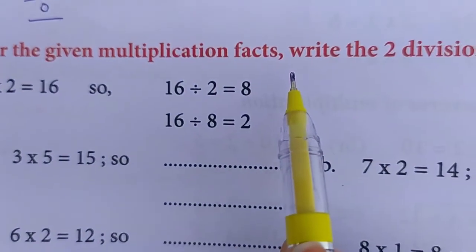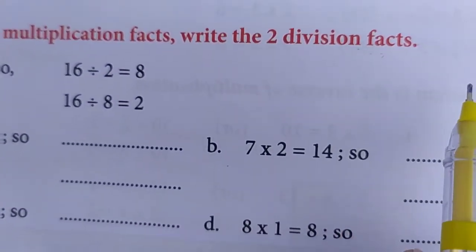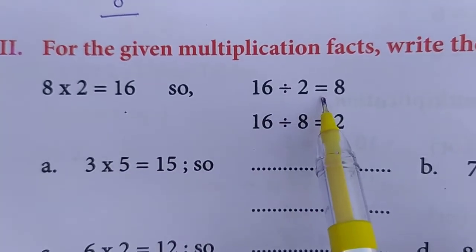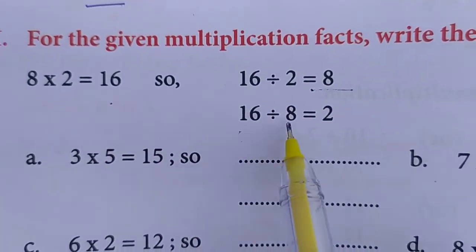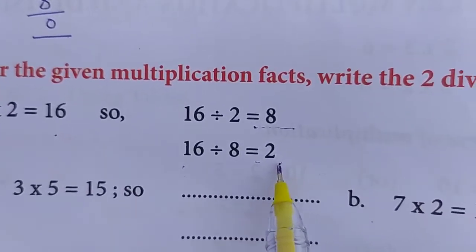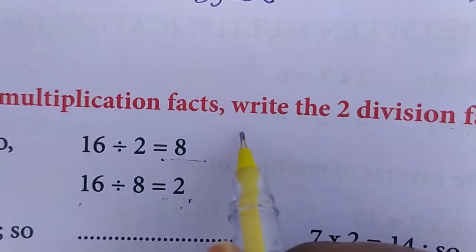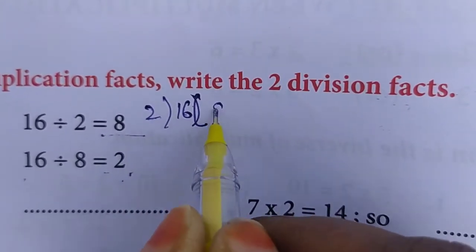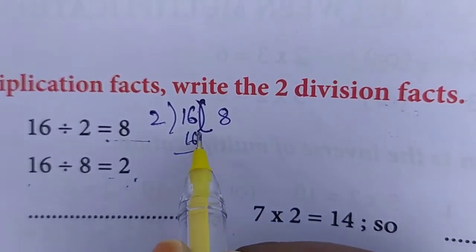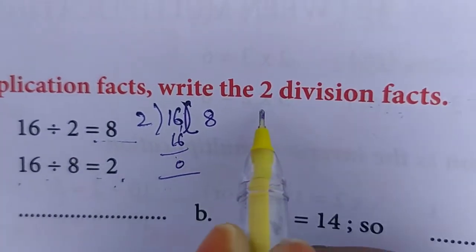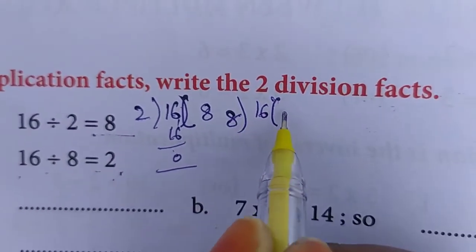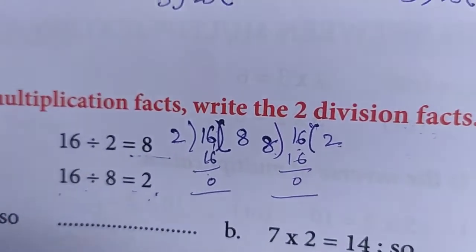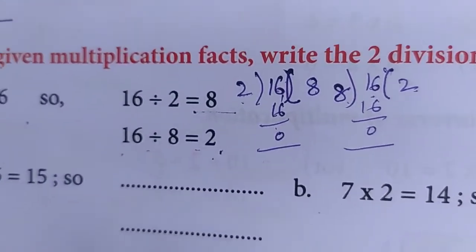For the given multiplication facts, write the 2 division facts, children. 8 twos are 16, so 16 divided by 2 is 8, 16 divided by 8 we will get 2. 16 divided by 2: 2 eights are 16, 16 minus 16, 0. 16 divided by 8: 8 twos are 16.